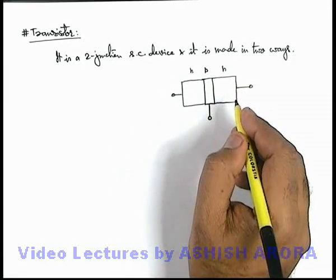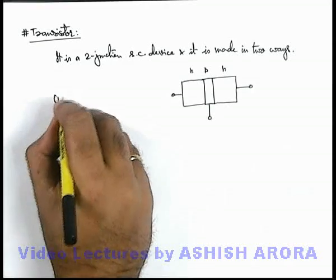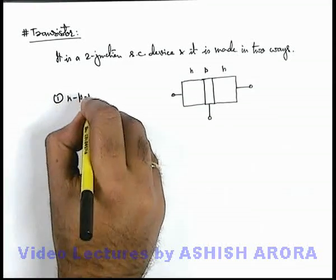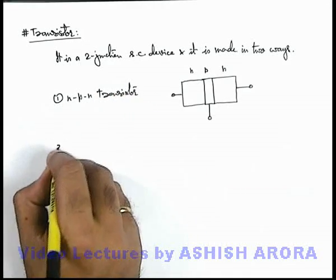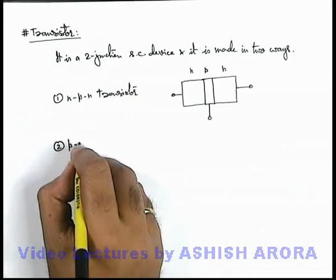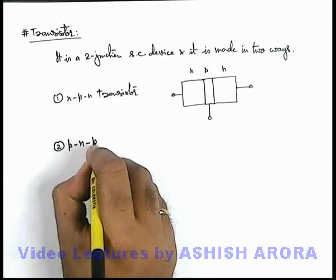There are three terminals of a transistor, and this is termed as n-p-n transistor. And obviously the other way in which it can be made is called a p-n-p transistor.